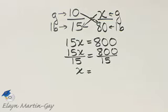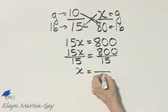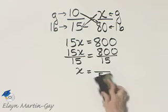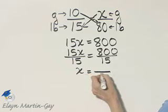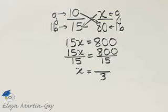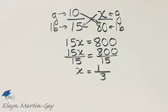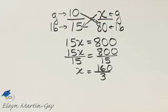And I have X is equal to... let's go ahead and start simplifying this fraction. I know there's a common factor of at least 5. 15 divided by 5 is 3, and let's divide 800 by 5 also. 15 divided by 5 is 3, and 5 divides into 800: 5 divides into 8 one time with a remainder of 3, and 5 divides into 30 six times. So that'll be 160 over 3.